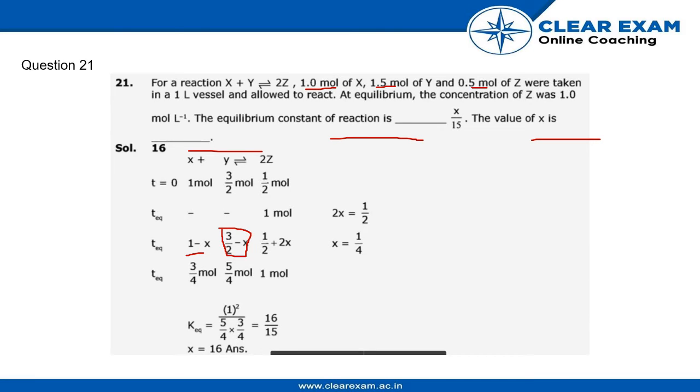z will be formed as 0.5 + 2x. Same goes with z—we have converted it into fraction, which would be 1/2 + 2x.